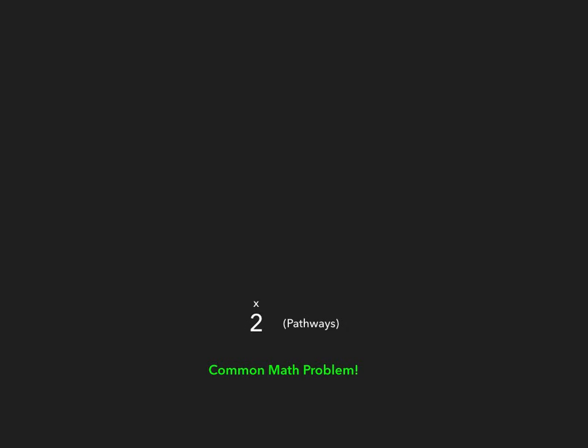We're going to get started with a common math problem. The first number we're going to write down is two, because in the coagulation cascade there are two major pathways. Then we write down the number five because we are trying to form clots, and 'clots' has five letters. Two times five equals ten — that's just math. So the common math problem is: two pathways times five clots equals ten.